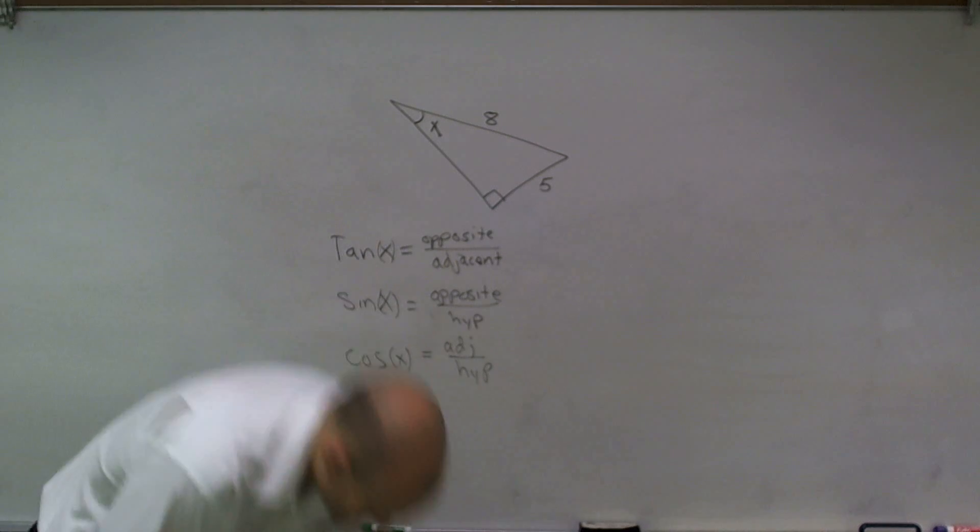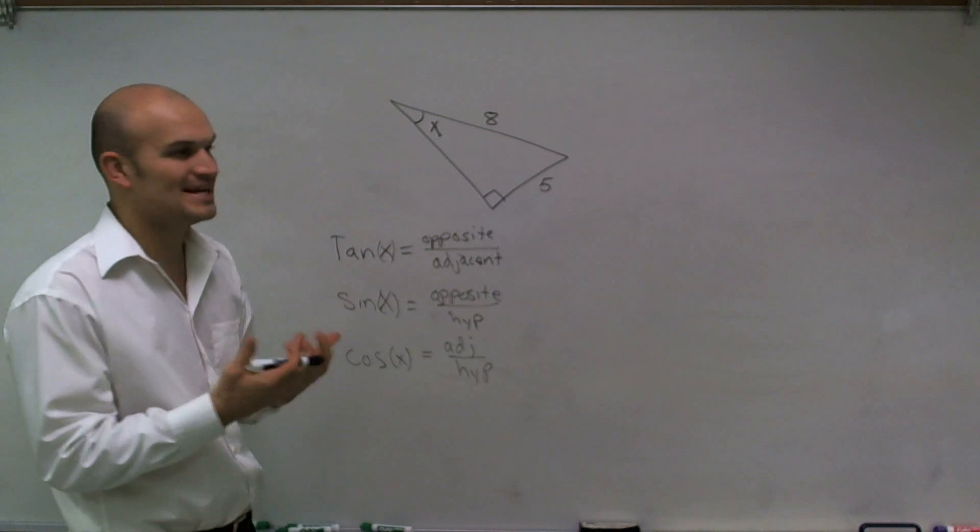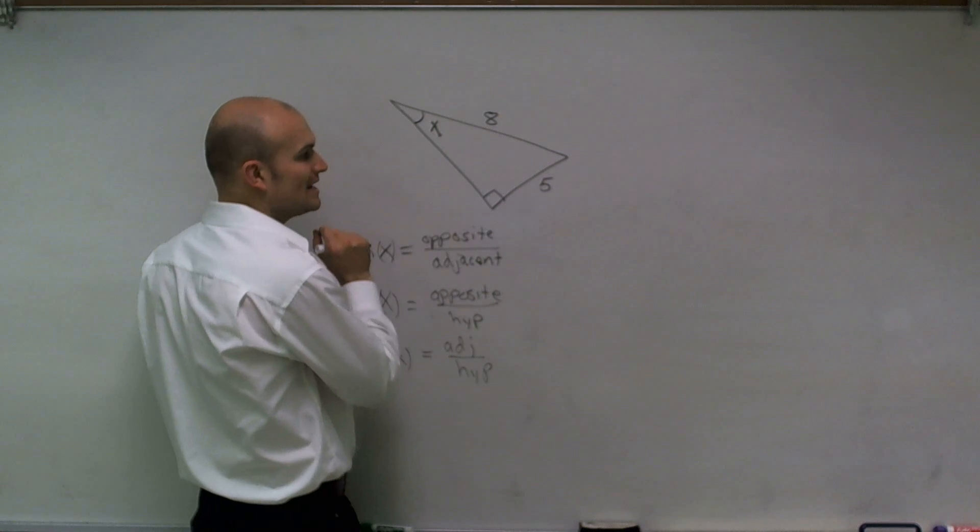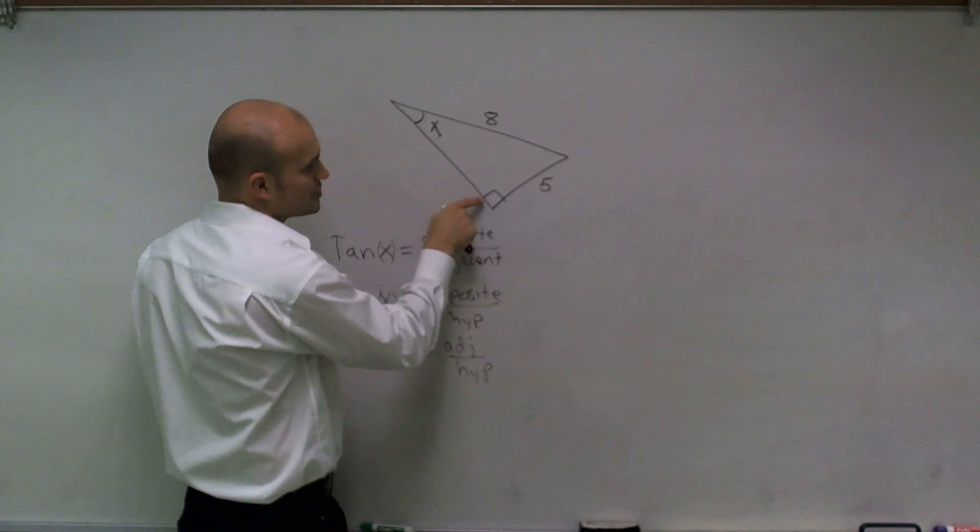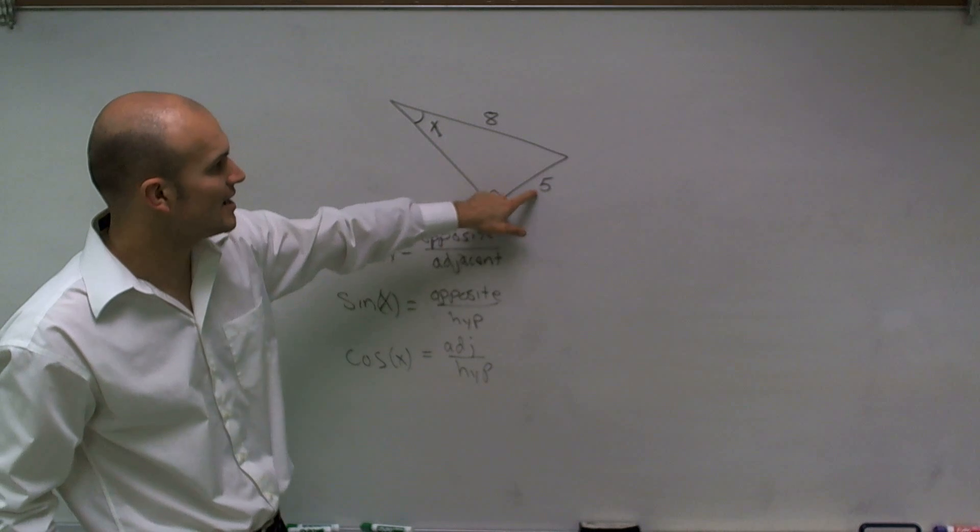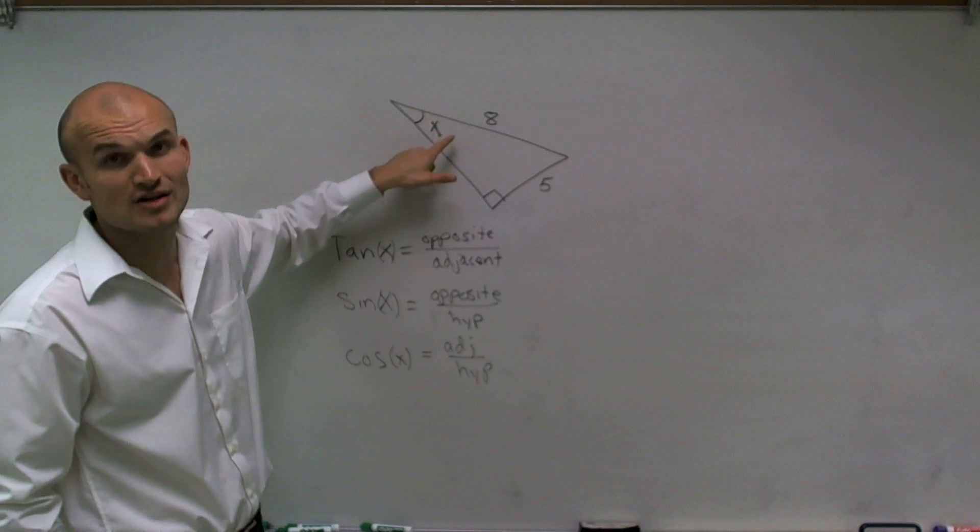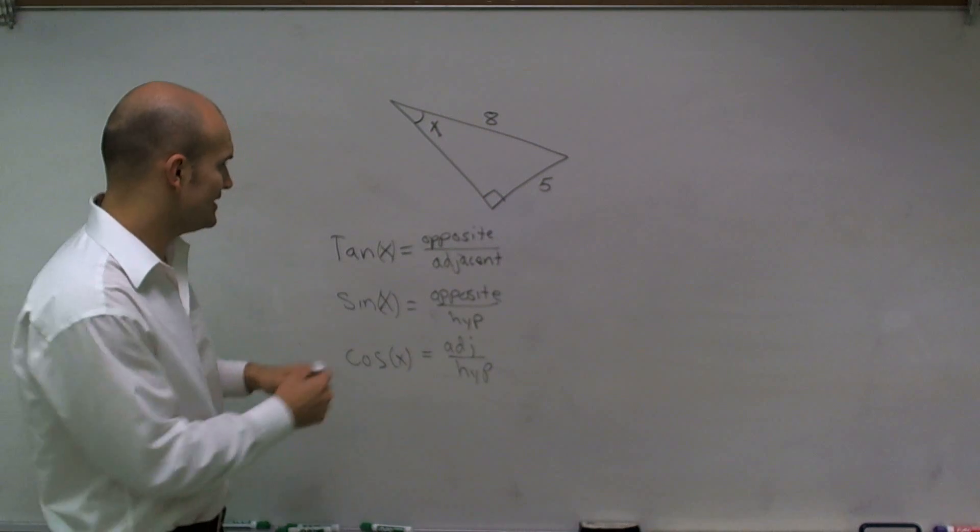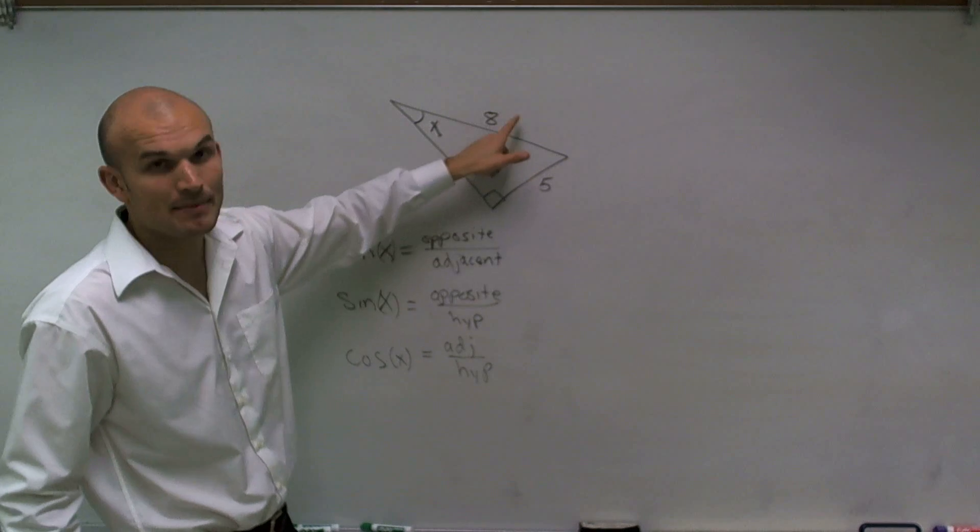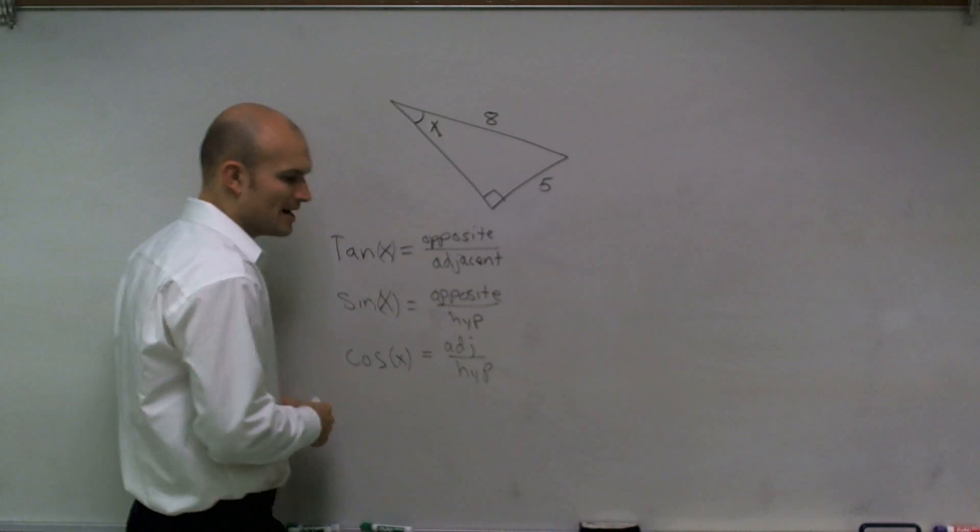Now, the opposite and adjacent sides come in where the opposite is directly across from your angle, and your adjacent connects your angle to your 90-degree angle. So what we can see is I have my hypotenuse is 8, and then what I have is my opposite side, because it's directly across from my angle x. So I need to look at which trig function deals with my opposite and my hypotenuse. And what I look at is I can see the sine function deals with opposite over hypotenuse.